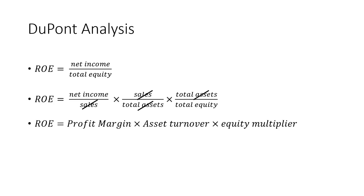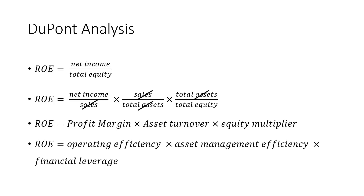The key takeaway of DuPont analysis is that a company should manage its profit margin efficiently by cutting costs, use its assets efficiently by maximizing sales per unit of assets held, and use financial leverage optimally by taking on the right amount of debt to maximize return on equity. This analysis is powerful because it merges profitability, asset management efficiency, and financial leverage to explain the return on equity for shareholders.